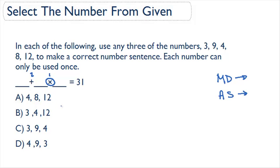Now let's try it. If we did example A, we would have 4 plus 8 times 12. This means we would multiply 8 times 12, which would give us 96, and we would have 4 plus 96, which equals 100. This is not 31, so A is not our correct answer.